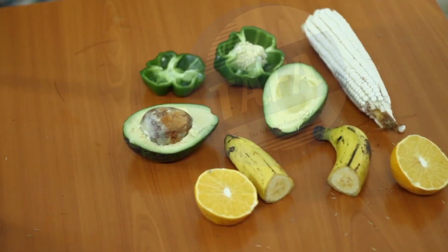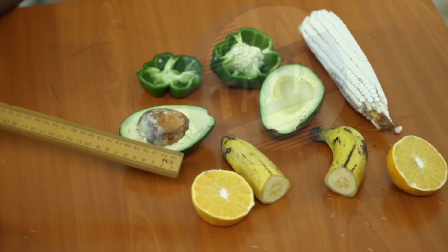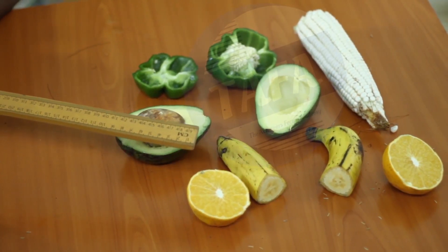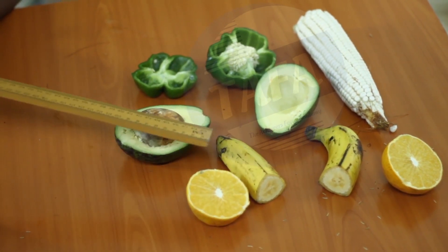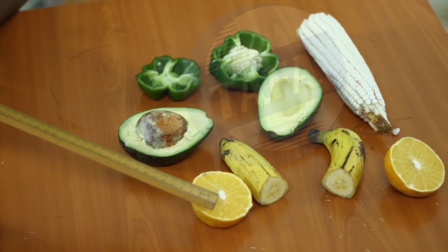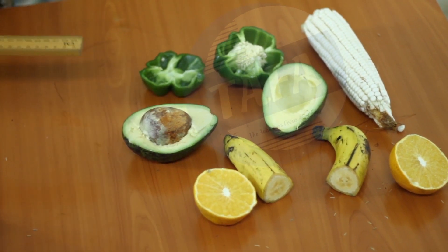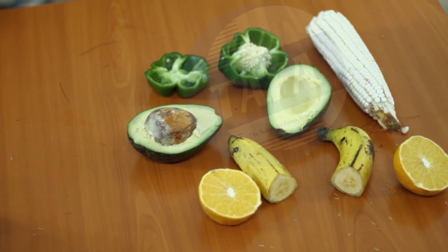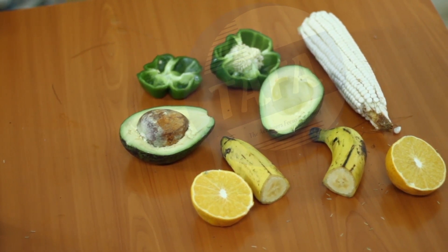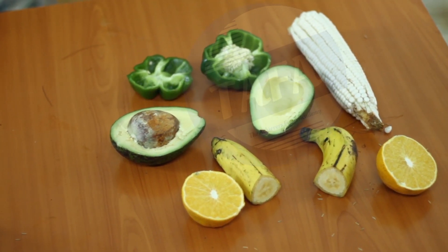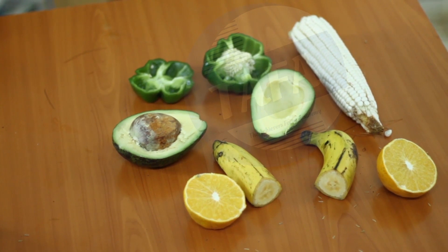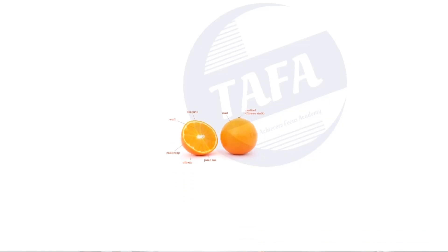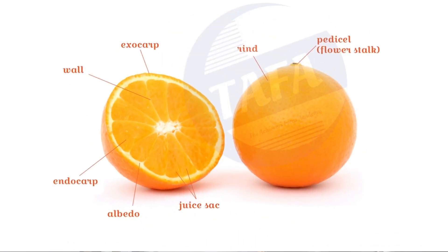An example we have here is an orange. This orange has an endocarp that has developed to form succulent structures, which we can easily squeeze to get juice.